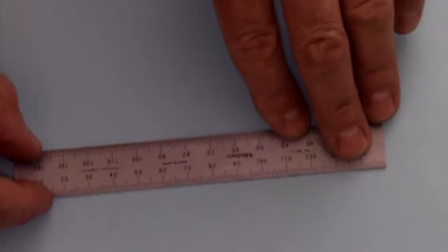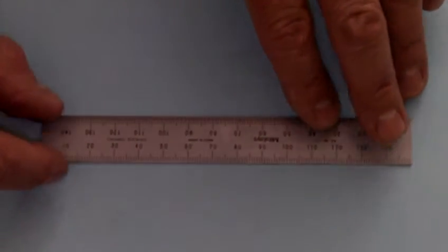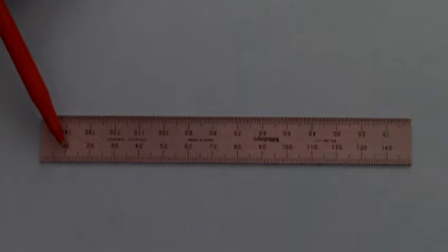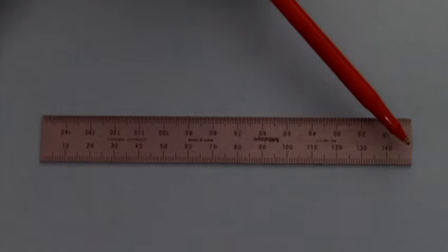And if we turn it around on the last scale, we have full millimeters. So each graduation is a full millimeter. Each tenth one is ten millimeters: ten, twenty, thirty, all the way up to 150.